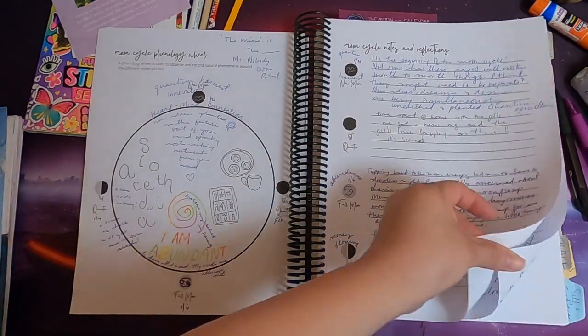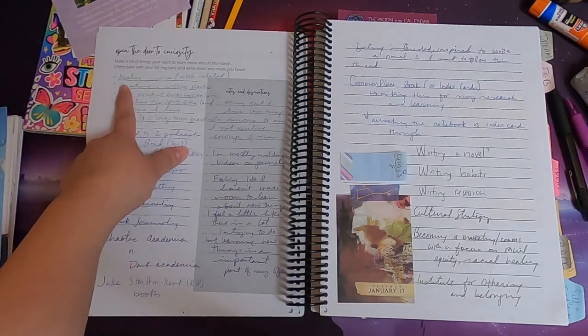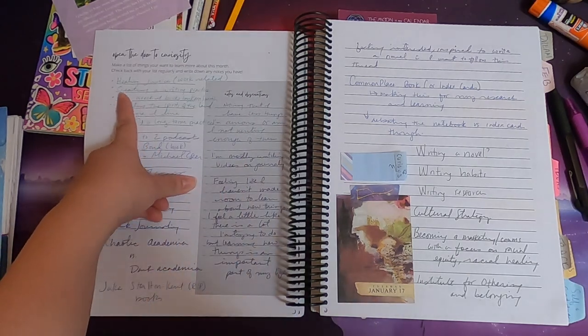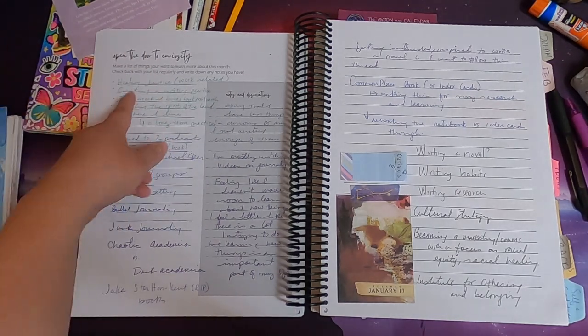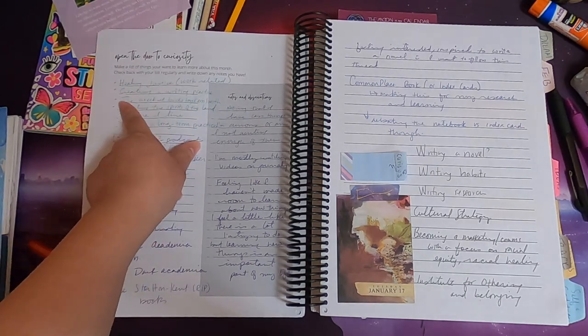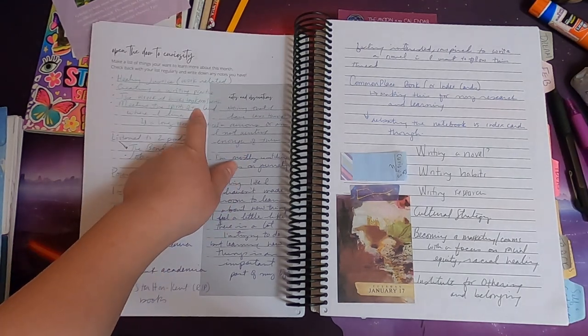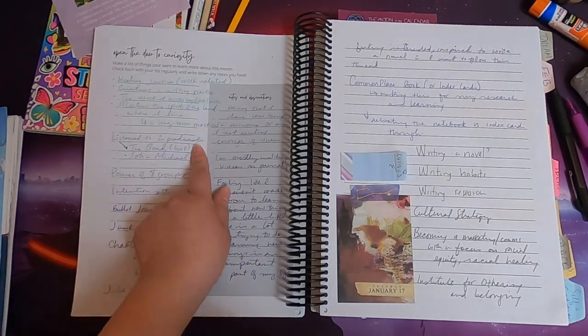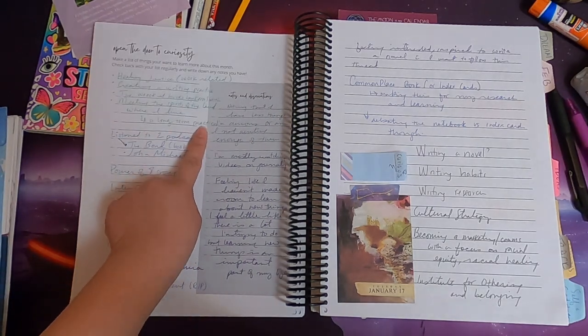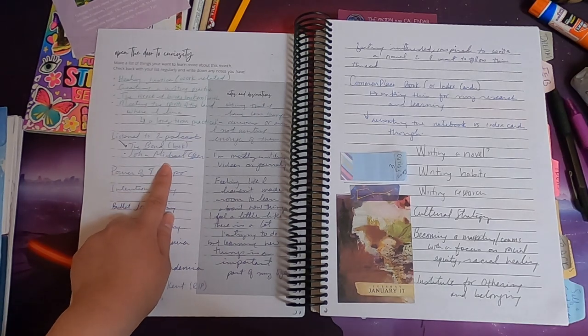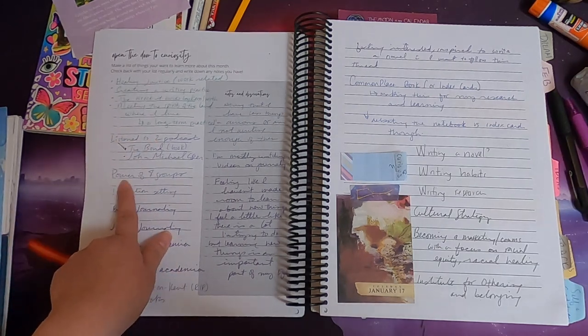There's also the open the door to curiosity, which is a place for you to write down different things and topics that you're interested in. I have here in January I was interested in learning more about healing justice, creating a writing practice, I was interested in the record books by Carrie Smith. I'm also really interested in meeting the spirits of the land where I live. I wrote this was a long-term practice. I wrote that I listened to two podcasts.